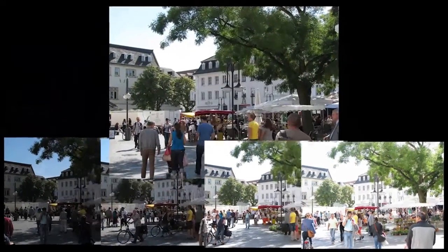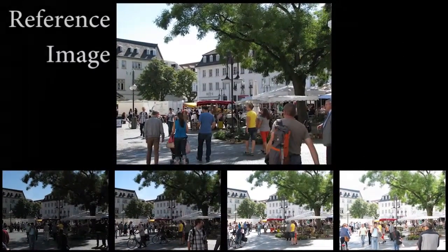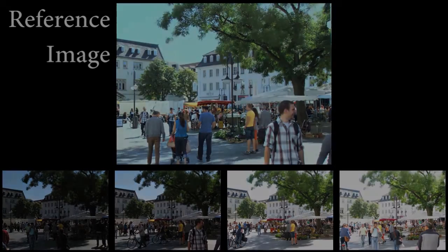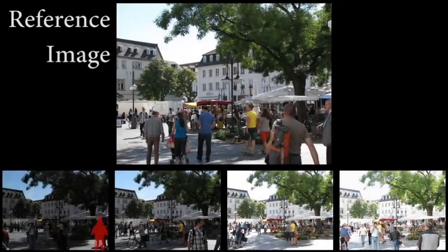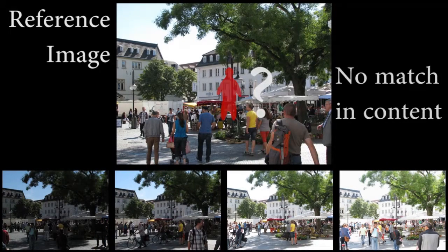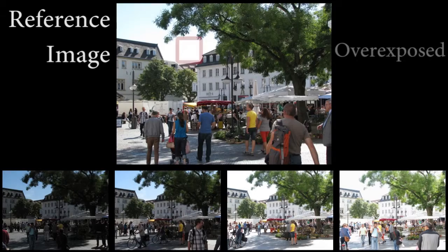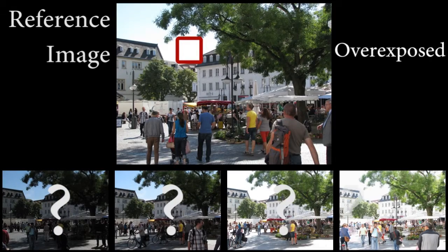Other approaches pick a reference image from which to jointly align and reconstruct by matching patches across exposures. However, this approach has implicit limitations. First, often in dynamic or cluttered scenes, the best output content spans multiple exposures and this is impossible with a fixed reference. Second, over or underexposed regions in the reference are difficult to match.